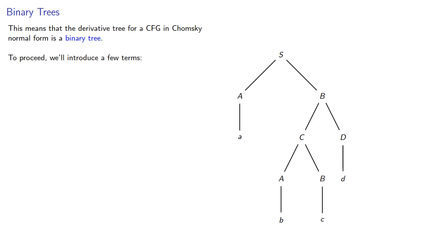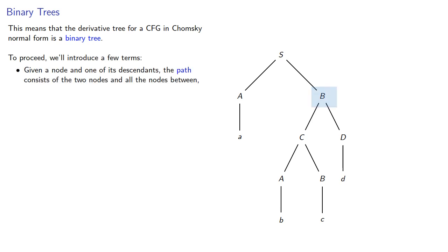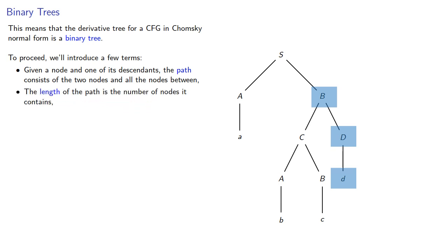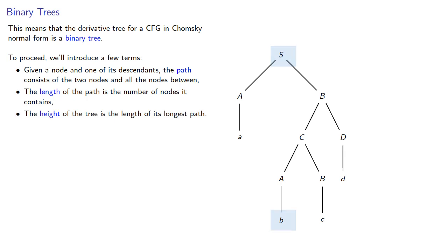To proceed, we'll introduce a few terms. Given a node and one of its descendants, the path consists of the two nodes and all the nodes between them. The length of the path is the number of nodes it contains, and the height of the tree is the length of its longest path.